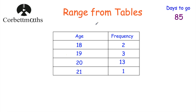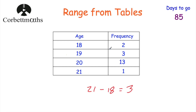Now let's look at the range. To find the range from a frequency table we just find the highest and lowest values and subtract them. The oldest person is 21 and the youngest is 18, so 21 minus 18 equals 3. The range of ages is three years.